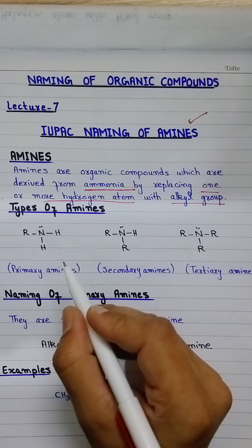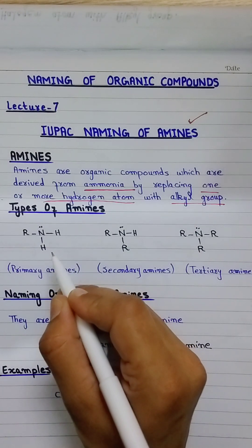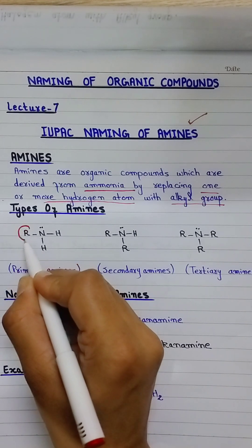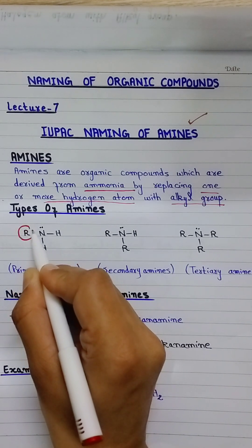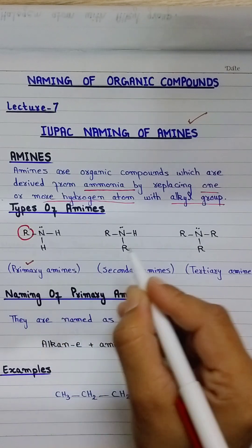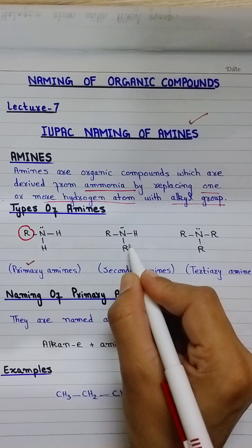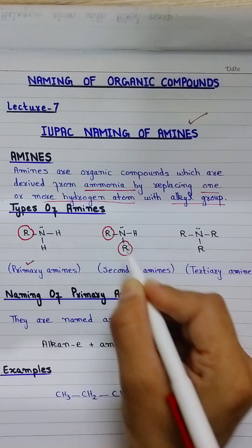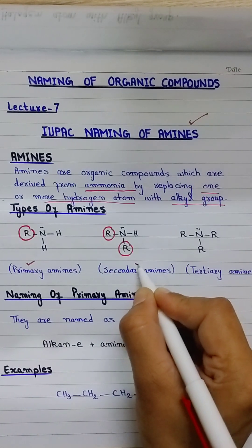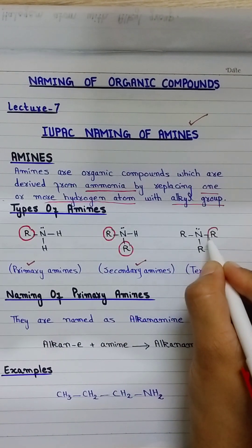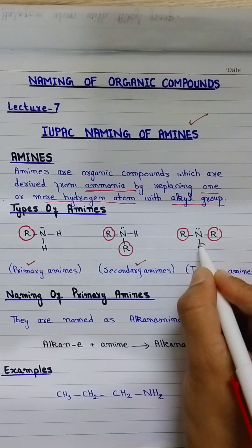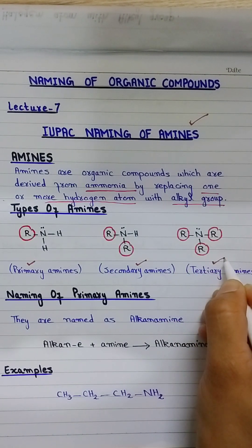Types of amines are based on the number of hydrogen atoms replaced. There are three types. If only one hydrogen of ammonia is replaced by one alkyl group, this is a primary amine. When two hydrogen atoms are replaced with two R groups or alkyl groups, this is a secondary amine. When all three hydrogen atoms are replaced by three alkyl groups, this is a tertiary amine.